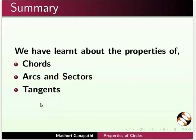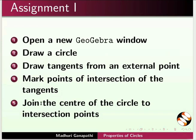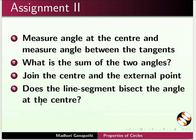Let us summarize. In this tutorial, we have learned about the properties of chords, arcs and sectors, and tangents. As an assignment, open a new GeoGebra window. Draw a circle. Draw tangents from an external point. Mark points of intersection of the tangents. Join the center of the circle to the intersection points. Measure the angle at the center and the angle between the tangents. What is the sum of the two angles? Join the center and the external point. Does the line segment bisect the angle at the center?